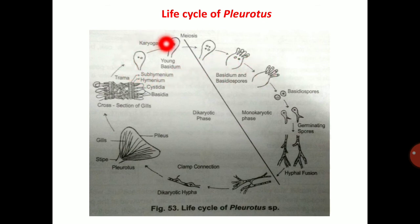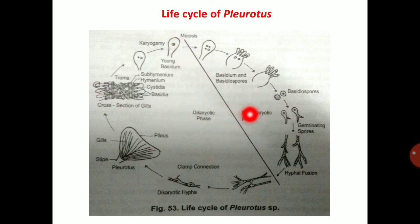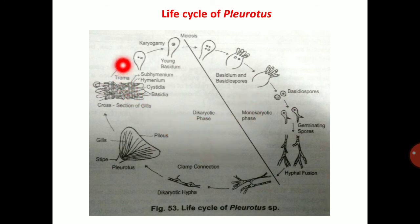In the basidium, karyogamy occurs, followed by meiosis, which produces four haploid nuclei. These four haploid nuclei pass through sterigmata to produce basidiospores. The basidiospore formation stage represents the monokaryotic phase; after the fusion of compatible mycelia (somatogamy), the dikaryotic phase begins; karyogamy marks the completion of the dikaryotic phase.